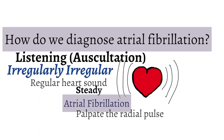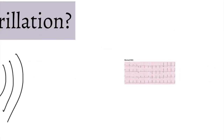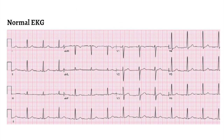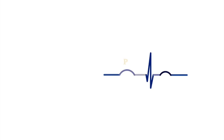Though we can get a great deal of information from a physical exam, it is important when suspecting any arrhythmia to obtain a 12-lead EKG. To understand how atrial fibrillation appears on an EKG, let's take a simple tracing in one lead. As we have discussed in the past, the heart cycle consists of a P-wave, QRS complex, and T-wave.